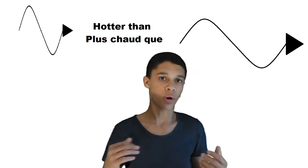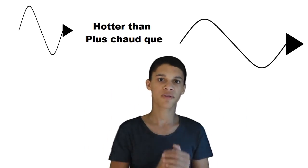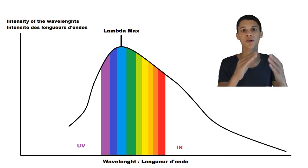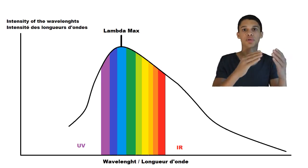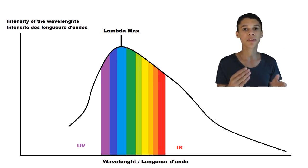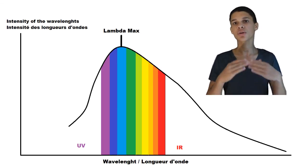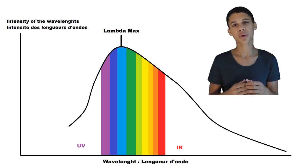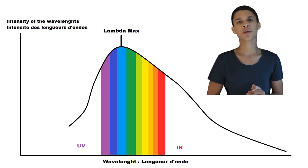So the hotter the star is, the shorter the wavelengths are. In order to calculate the temperature, we first need to find what is the wavelength found in the greatest proportions — it's called lambda max. Here, lambda max has radiation of the color blue, and we know that blue has a wavelength of around 450 nanometers.